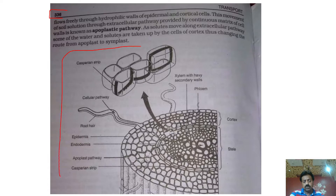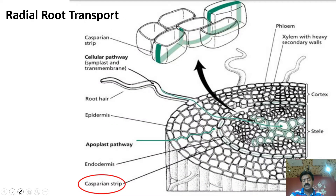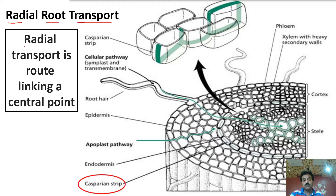ڈی ای آگرام ریڈیل روٹ ٹرانسپورٹ کو اور زیادہ کلیر کرتے ہیں۔ یہ ڈی ای آگرام آف ہماری ٹیکس بک شوئنگ ریڈیل روٹ ٹرانسپورٹ ہے۔ ریڈیل ٹرانسپورٹ کی ڈیفینیشن: ریڈیل ٹرانسپورٹ is a root linking a central point — پانی سوائل سالویشن سے اندر آ رہا ہے اور move کرتا ہوا central point پہ پہنچتا ہے۔